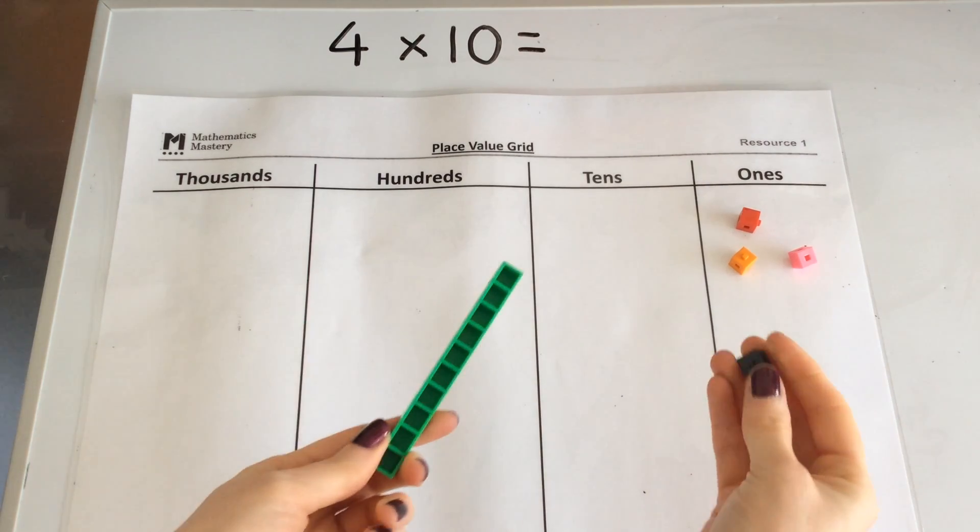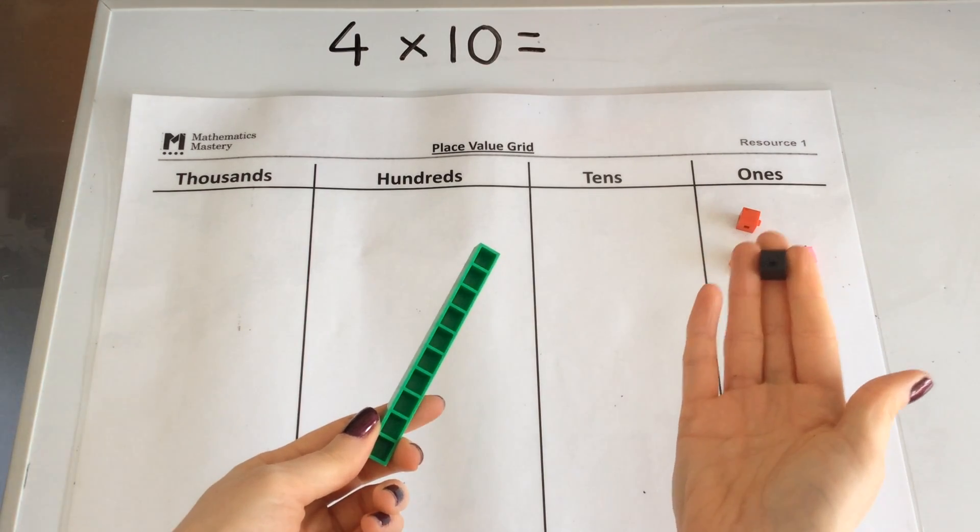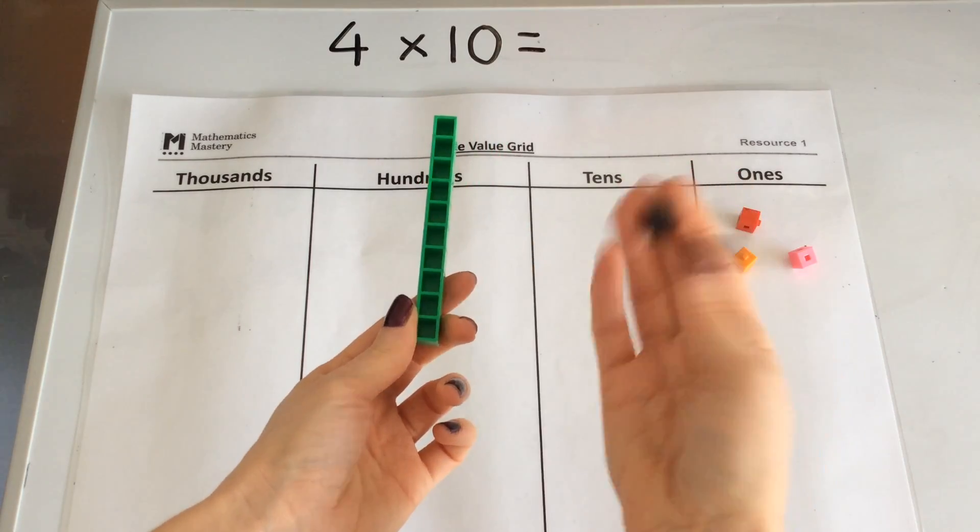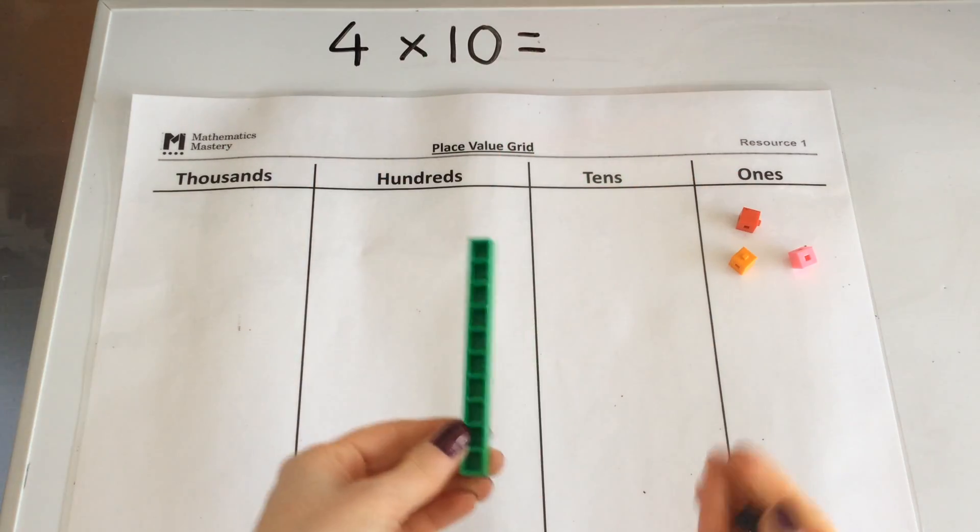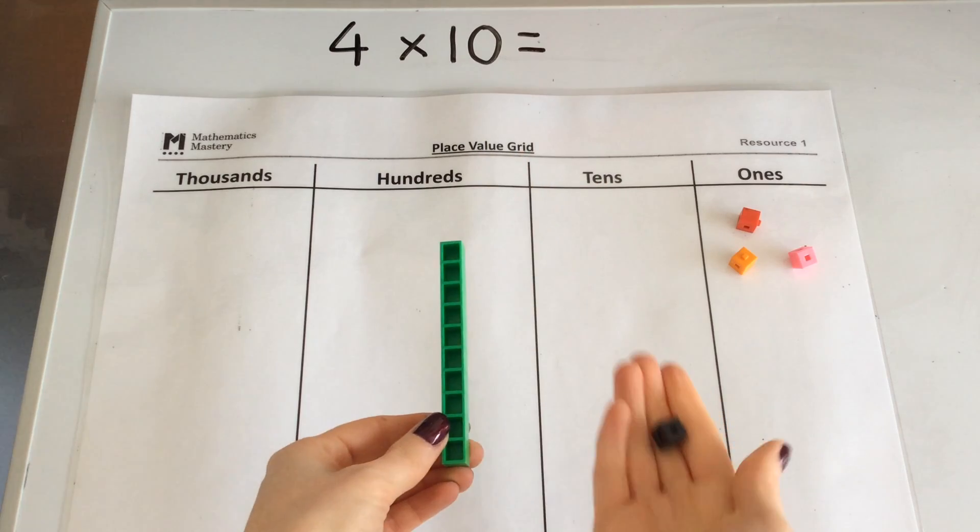Therefore if I wanted to make 1 ten times greater I could exchange it for a 10 stick. So 4 times 10 is my equation.